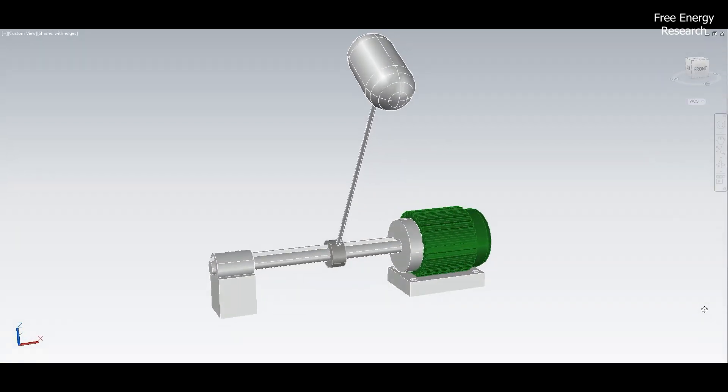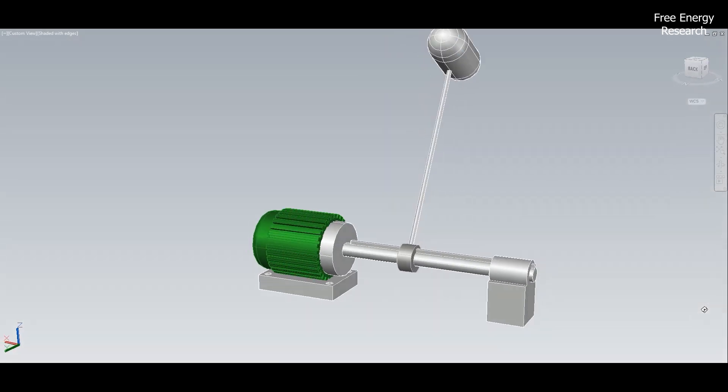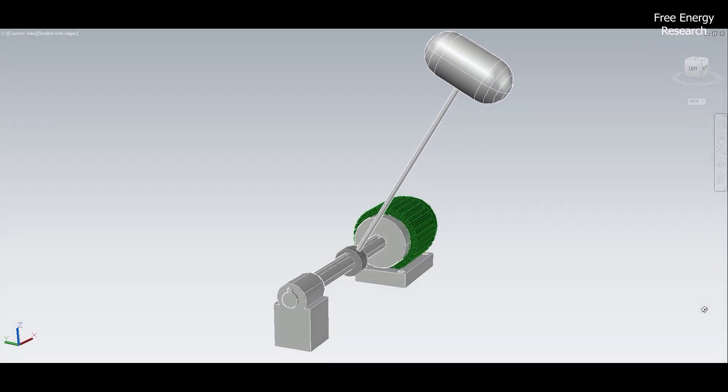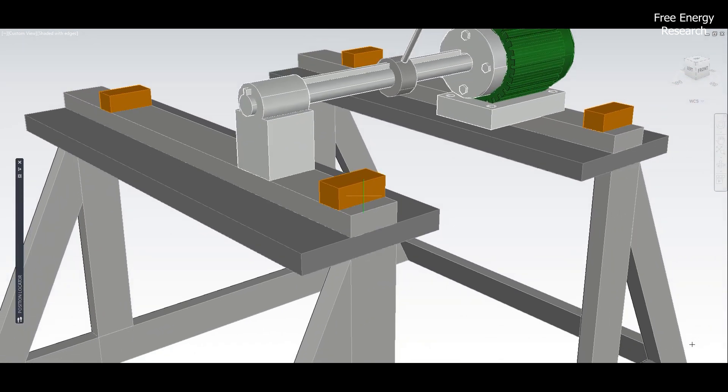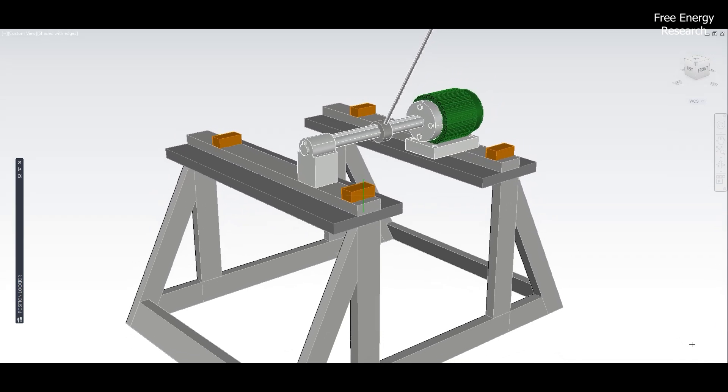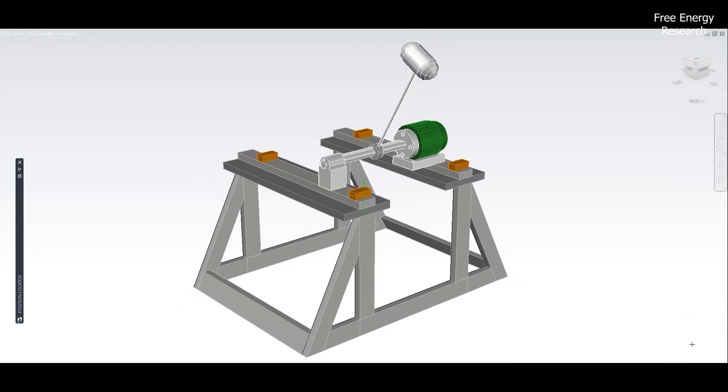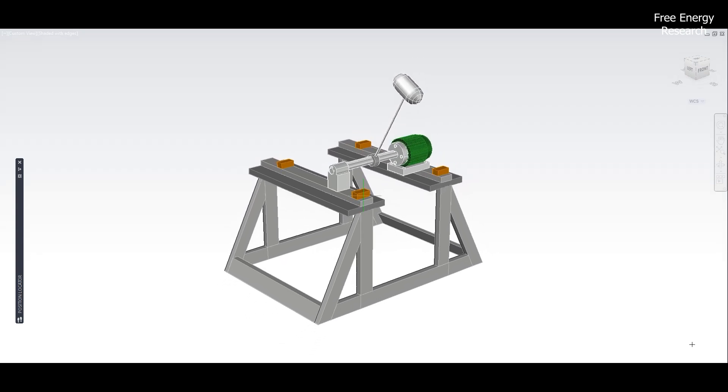As the pendulum descends, it sets off a mesmerizing cycle, propelling the wheels connected to it and generating electricity in the process. But how does it work? The beauty lies in the fundamental principle of gravity. As the pendulum falls, it imparts rotational motion to the generator, converting the kinetic energy into electrical power.